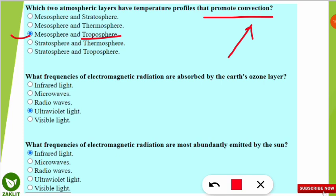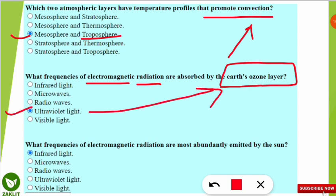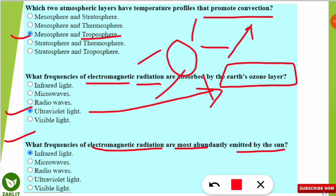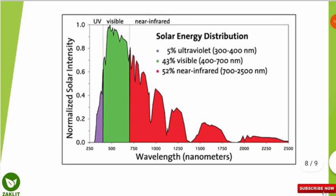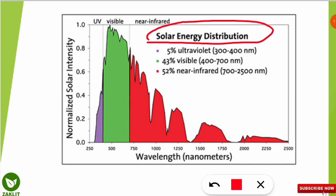The electromagnetic radiation absorbed by Earth's ozone layer is ultraviolet rays — absorbed by the ozone layer situated in the stratosphere. The most abundantly emitted electromagnetic radiation by the sun is infrared light. This graph shows the solar energy distribution: total solar electromagnetic radiation consists of about 52% near-infrared (wavelength 700–2500 nm), 43% visible rays (400–700 nm), and 5% ultraviolet (300–400 nm).